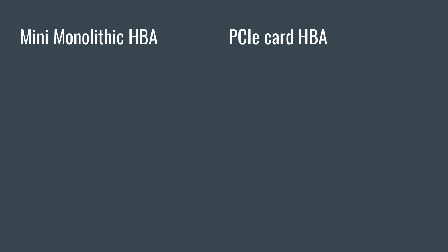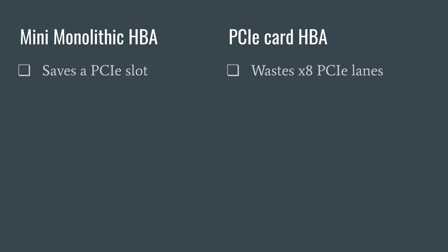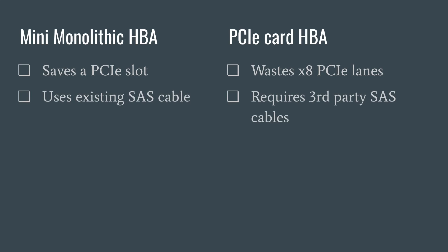Now if your server does have a mini monolithic slot, you can still use a PCIe card instead, and in fact that was what many people did before I discovered a way to flash the mini cards with IT mode firmware. However, now that it is possible to use the mini monolithic slot for an IT mode HBA, I highly recommend using a mini card instead of a PCIe card. First, you'll save yourself a PCIe slot that you can use for something else instead of wasting the eight PCIe lanes already allocated to the mini monolithic slot. Secondly, you can reuse the existing SAS cables which are already the perfect length, instead of having to buy third-party SAS cables that are often too long, resulting in excess cable coiled up somewhere in the server and blocking the airflow. So if you have that mini monolithic slot, definitely use it.